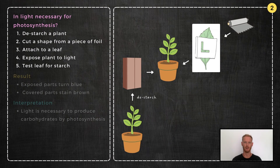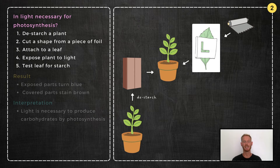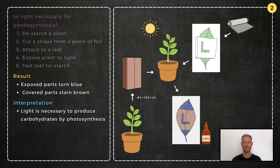Experiment 2: Is light necessary for photosynthesis? Cut a shape from a piece of foil and fix it to a destarched leaf still attached to the plant. The covered part is the experiment, as it receives no light, and the exposed part is the control. Expose the plant to light for several hours, remove the leaf, and test for starch by applying iodine. The exposed parts will turn blue and the covered parts will remain brown, showing that light is necessary for photosynthesis.